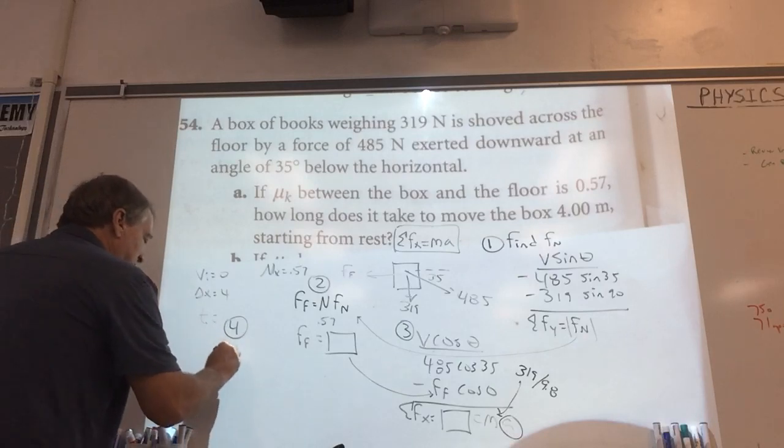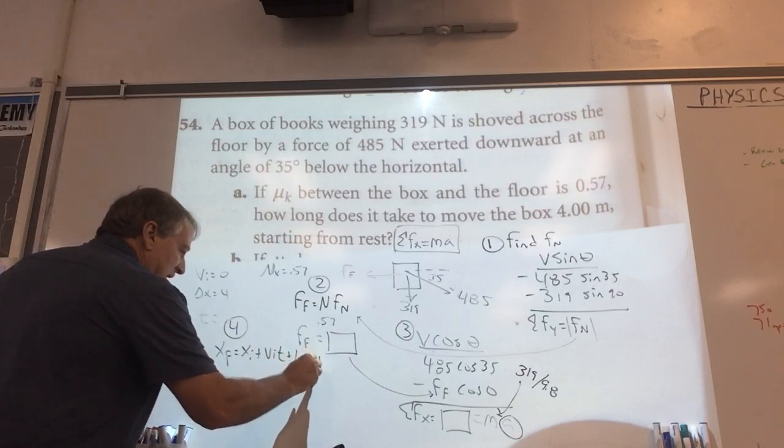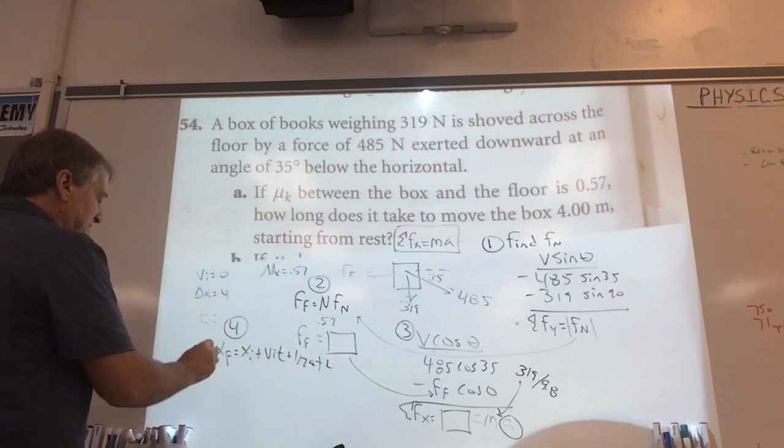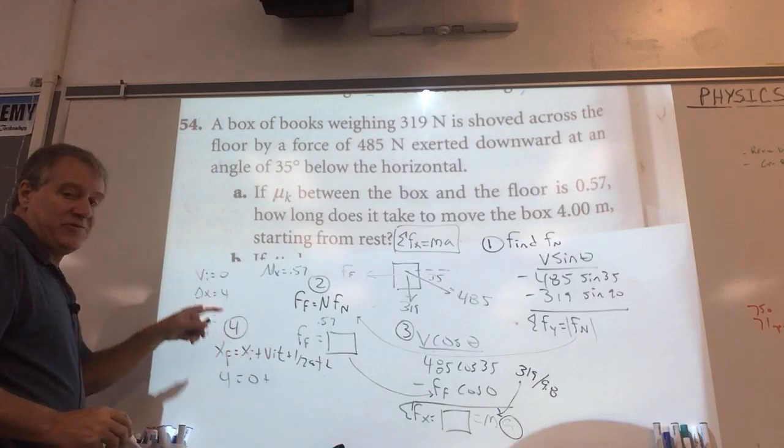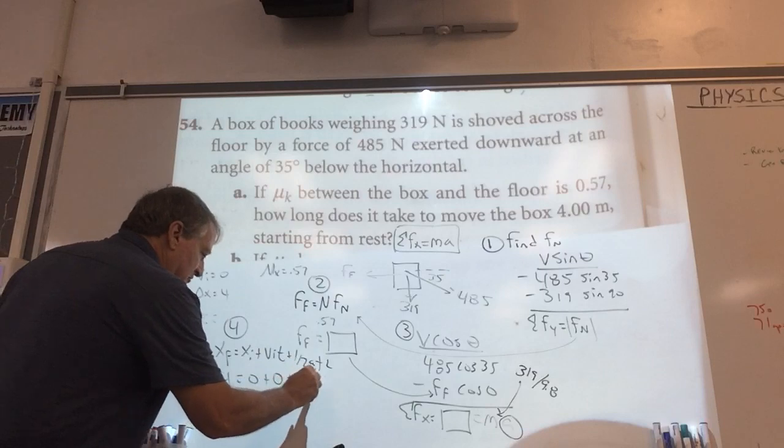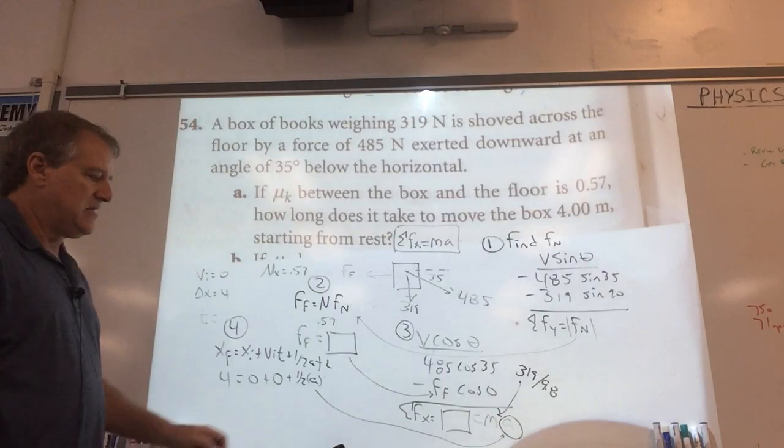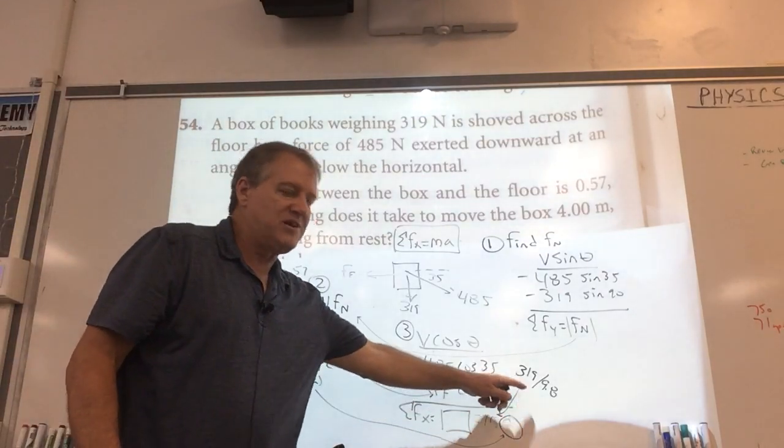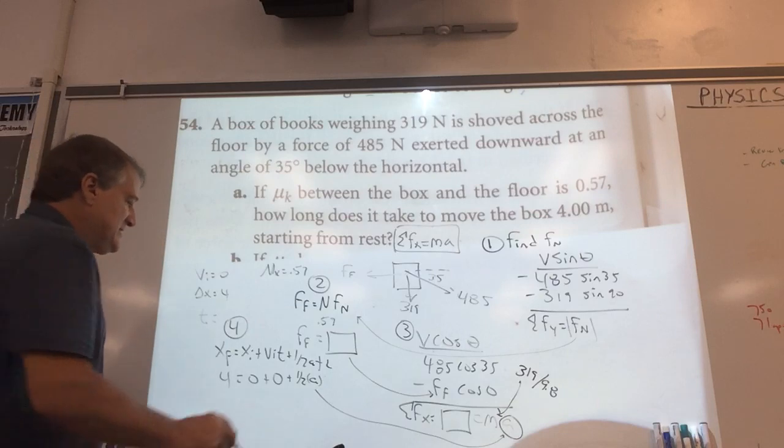I'm going to use this equation. I'm just going to flat out tell you. Delta x equals vit plus 1 half at squared. This is how far we're traveling. Let me know that's 4. That's 0. It's starting from rest. So vit becomes 0 plus 1 half a. And remember where a comes from. Over here. It's going to be the sum of the forces in the x direction divided by that quotient there times t squared.